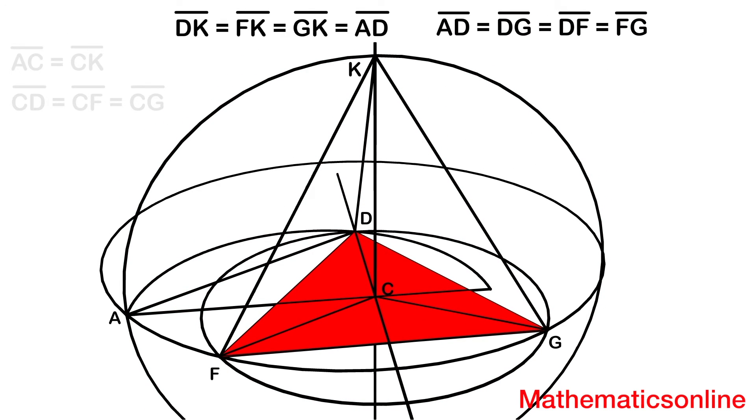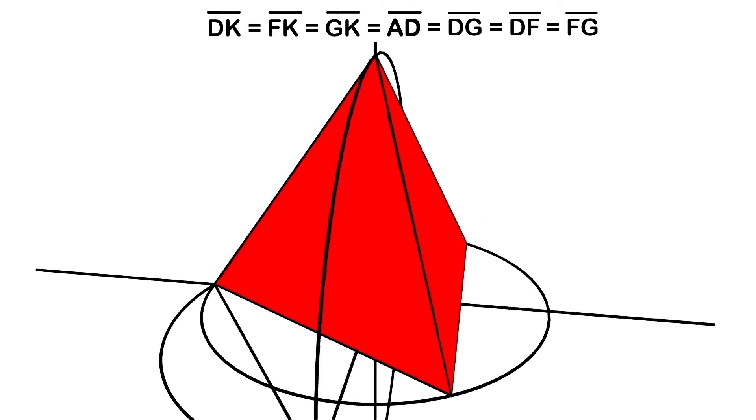So AD is equal to the sides of the equilateral triangle, and it is also equal to the remaining sides of the tetrahedron. Therefore, all sides are the same length.